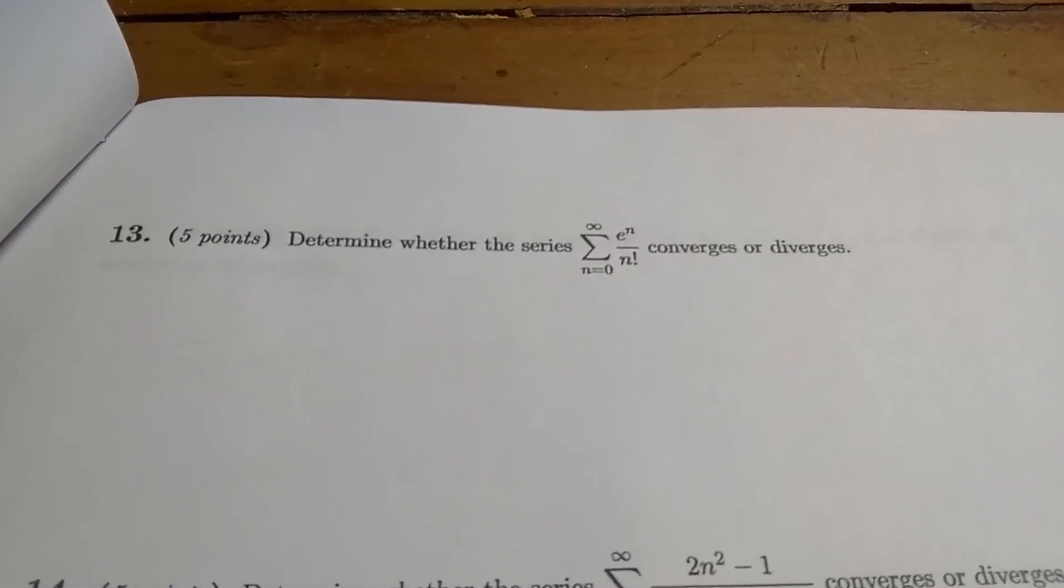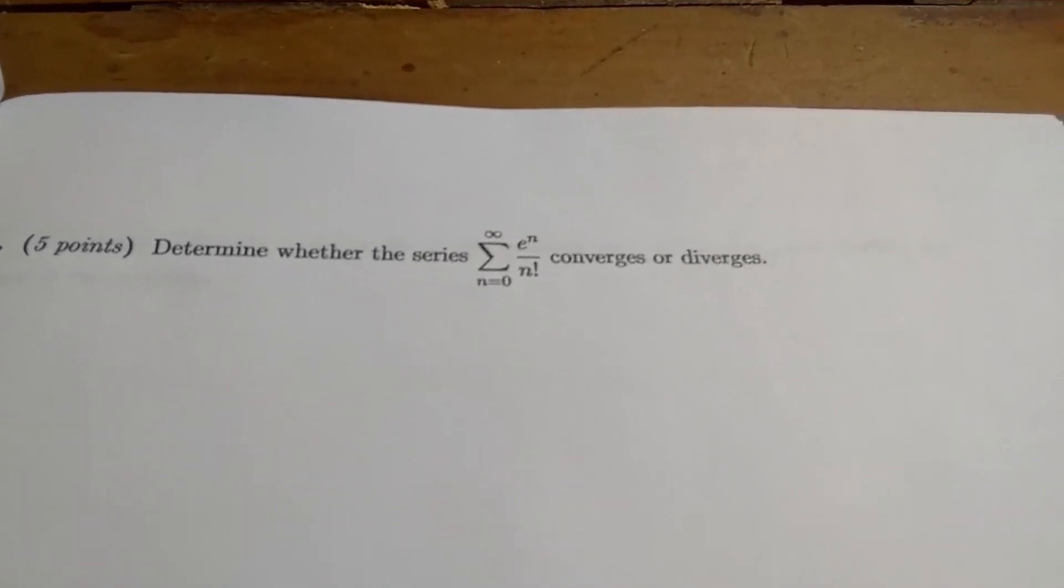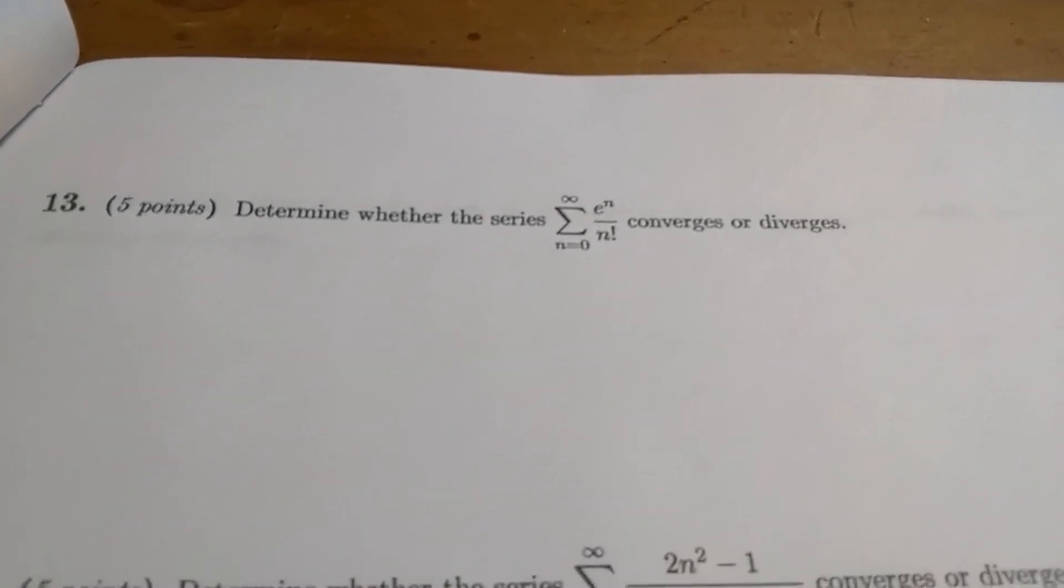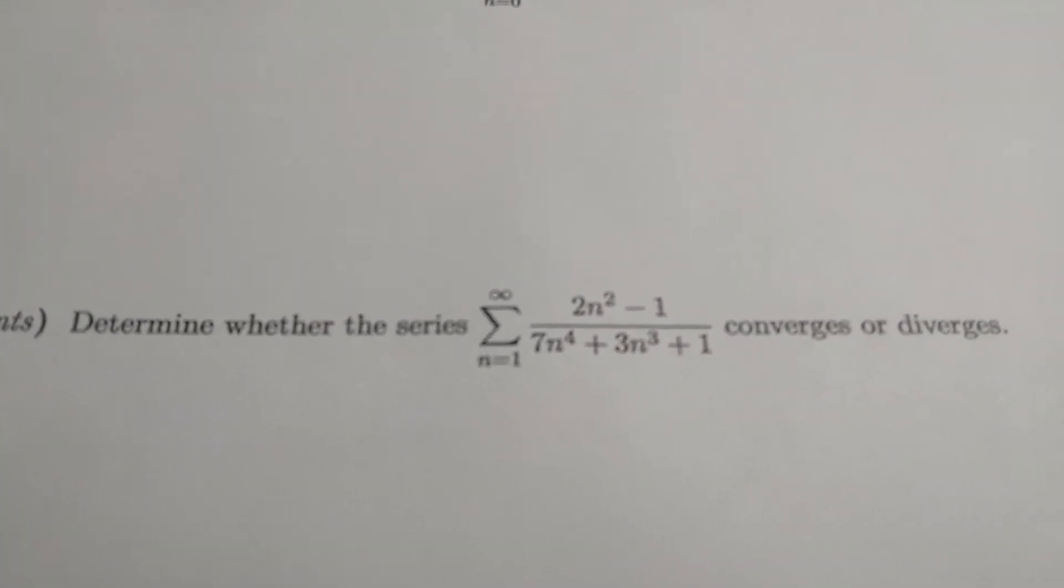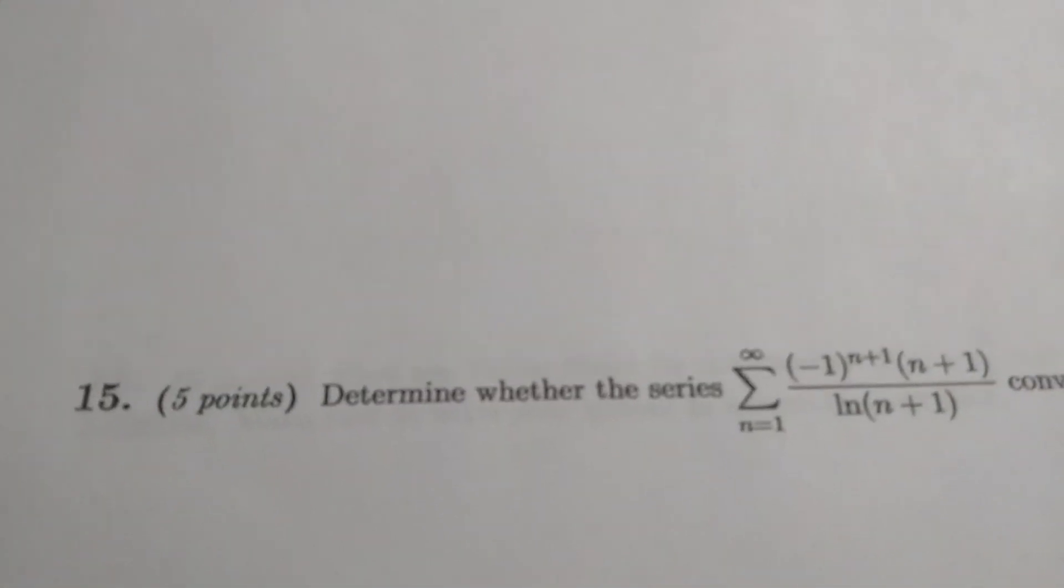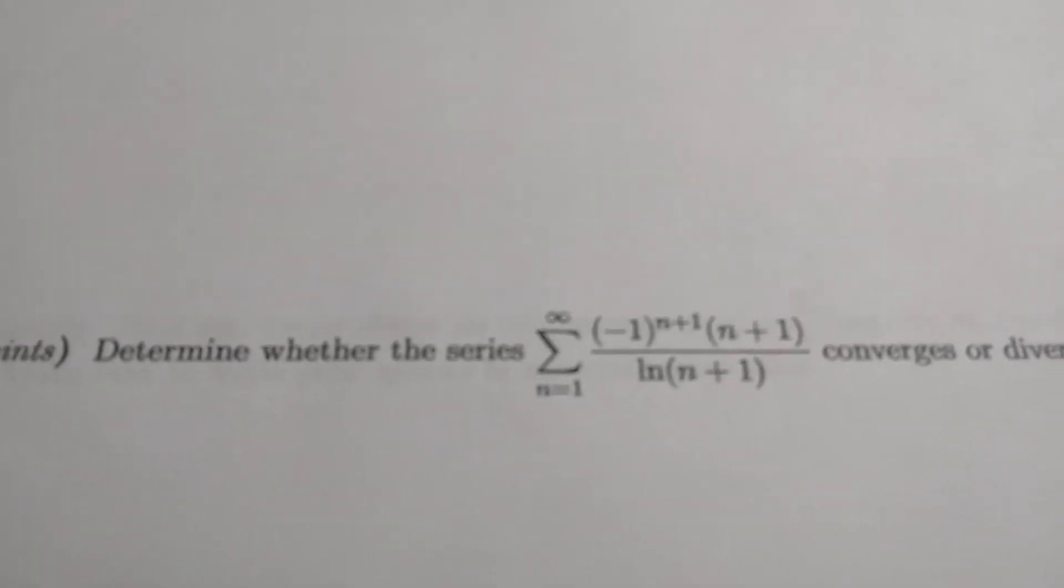All right, so we're now on the fifth page of the test. The question says determine whether the series converges or diverges. I think this one's a little bit harder, if I recall. It's been a long time since I've done this problem. Fourteen is not so bad. You can use limit comparison, and it should converge. Fifteen should diverge by the nth term test, so nothing fancy there.